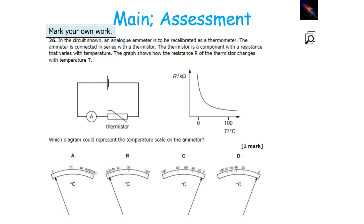Looking at the results for the thermistor, at lower temperatures there's a really large change in resistance, so there'll be a large change in current. At high temperatures there's a small change in resistance, so there'll be a small change in current, and you won't need big precision at those values. You'll need a widely spread scale at lower temperatures for the big change in current, but a small scale difference at larger temperatures. So the answer is A.